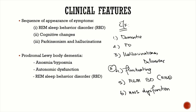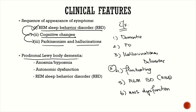The sequence of appearance: first is REM sleep behavior disorder, which precedes Lewy body dementia by several years — sometimes even before the onset of dementia. Next, the patient develops dementia, and shortly after, parkinsonism and hallucinations appear. Regarding prodromal Lewy body dementia, patients will have anosmia — very importantly — and RBD, which precede Lewy body dementia by several years, along with some degree of autonomic dysfunction.